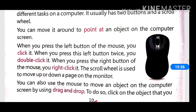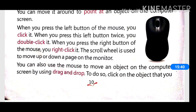When we use the mouse, pressing the left button once is called a click. When we press the left button twice, we call it a double click. We can also press the right button for a right click. The scroll wheel, when moved up or down, scrolls the page up or down on the screen.